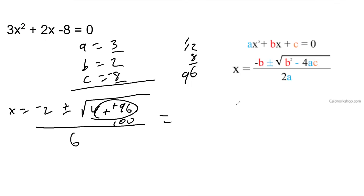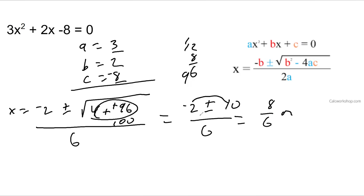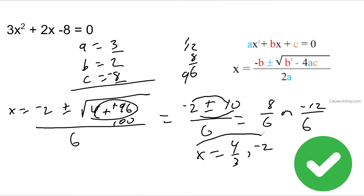The square root of 100 is 10. So it's negative 2 plus or minus 10 over 6. Negative 2 plus 10 is 8 over 6, or negative 2 minus 10 is negative 12 over 6. x is equal to: I'll reduce 8 over 6 to 4 thirds — normally we keep it as an improper fraction — or negative 12 over 6 is negative 2. And that's what x is equal to.